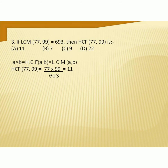Question 3: The LCM of 77 and 99 is given as 693, and we have to find the HCF. Use the result: product of the two numbers equals product of their HCF and LCM. So, 77 × 99 = HCF × 693. Solving, the HCF is 11. The correct option is A.